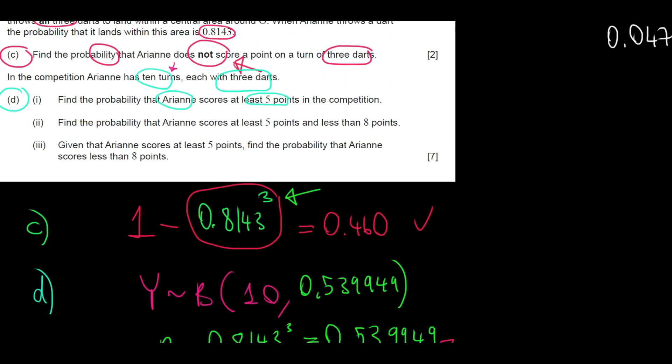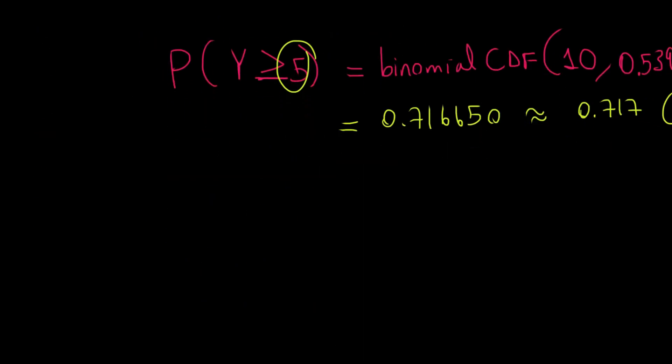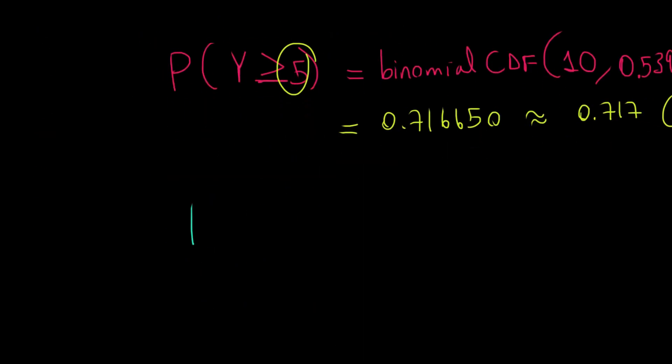The second part of D says the following: find the probability Ariane scores at least five points and less than eight points. Well, very similar logic. I'm just going to put the interval above five, so at least five, greater than or equal to, less than eight. It doesn't say at most eight, it says less than eight. So I'll assume strictly less than eight. Now, because we have a binomial distribution, we only consider integer values for y, since this is a discrete variable. So we have to consider the values of five, six, and seven.